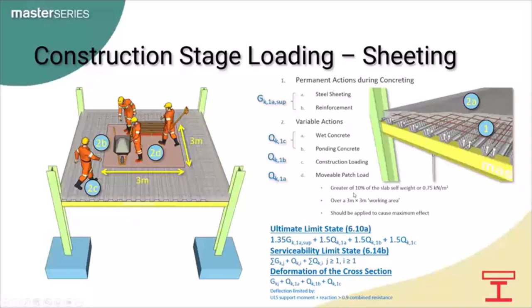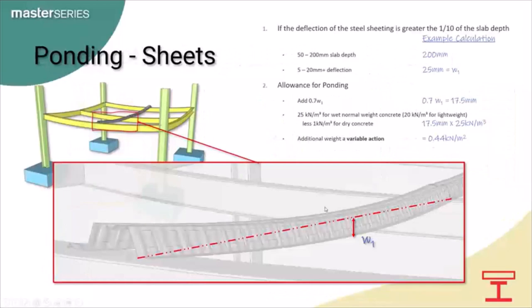The movable patch load should be applied to cause maximum effect, i.e. the most unfavourable case. SCI P300 goes into what we should be considering for the movable patch load. Ponding — if you can imagine the process with flexible sheets and beams and a moving liquid attracted to the point of greatest deflection — a bending beam or sheet attracts liquid concrete, creating ponding which creates greater deflection which then attracts more liquid concrete. The cycle continues and deflections can get significant if not under control. If the deflection of the steel sheeting is greater than one tenth of the slab depth, the effect of ponding should be considered; otherwise it may be ignored.